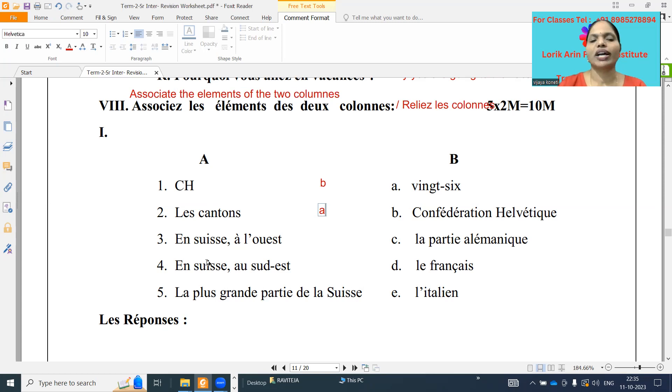Next one, 'en Suisse, à l'ouest.' In Switzerland to the west, west side, France is located. Obviously French they are speaking. So what it will be, D. And next one, 'en Suisse, au sud-est.' In the southeast, Italy they are speaking. So E.